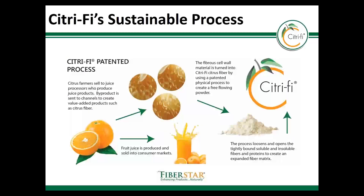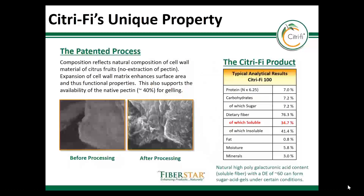Our product is made by a very sustainable process. We use either fresh citrus pulp, or if not available out of the harvest season, dried cell wall material is used to produce Citrify. Since the raw material comes directly from the citrus juicing industry, Citrify's holistic composition contains about 40% native pectin. In the nutrition analysis, pectin shows up as a soluble dietary fiber and to a little extent also in the insoluble fiber fraction.